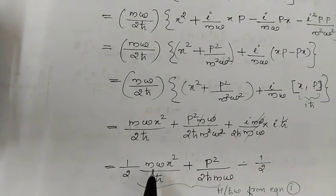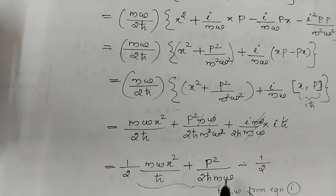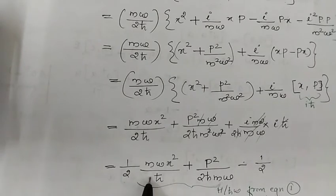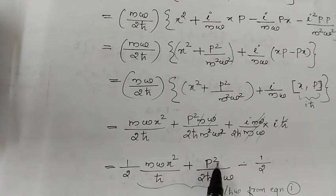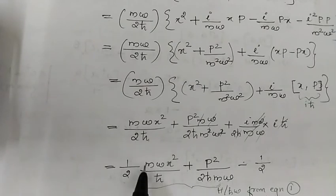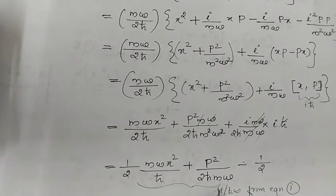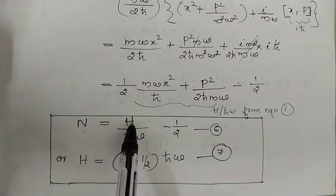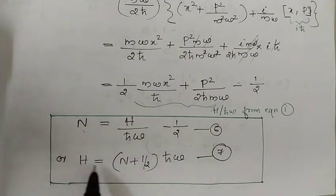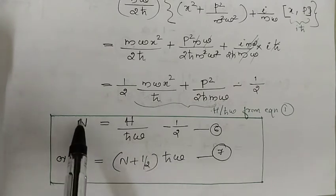We recognize that the Hamiltonian is H equal to p squared by 2m plus half m omega squared x squared. Comparing with the expression for the number operator N, we find that N equals H divided by h-bar omega minus one half, or equivalently the Hamiltonian H equals N plus one half times h-bar omega. This is the important result.